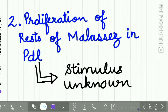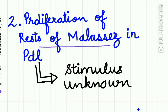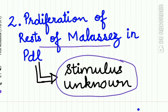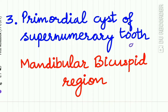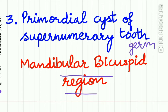The second theory says that it occurs due to proliferation of the rests of Malassez in the periodontal ligament, but the stimulus of this proliferation is unknown. Thirdly, the primordial cyst of a supernumerary tooth germ gives rise to a lateral periodontal cyst. These supernumerary teeth are commonly present in the mandibular bicuspid region.